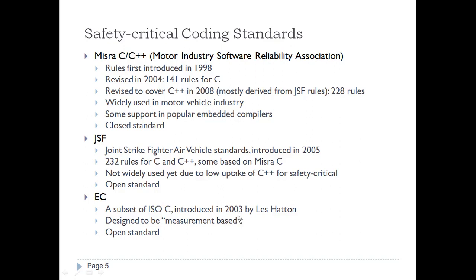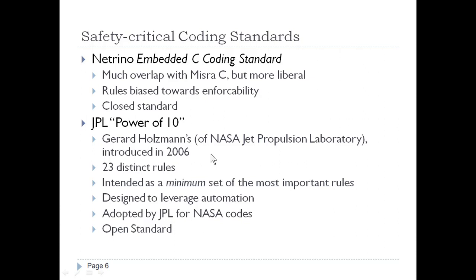EC is a subset of ISO C, introduced in 2003 by Les Hatton, and is designed to be measurement-based and is an open standard. The Netrino Embedded C Coding Standard has much overlap with MISRA C but is more liberal and less stringent, with rules biased towards enforceability. It is a closed standard.